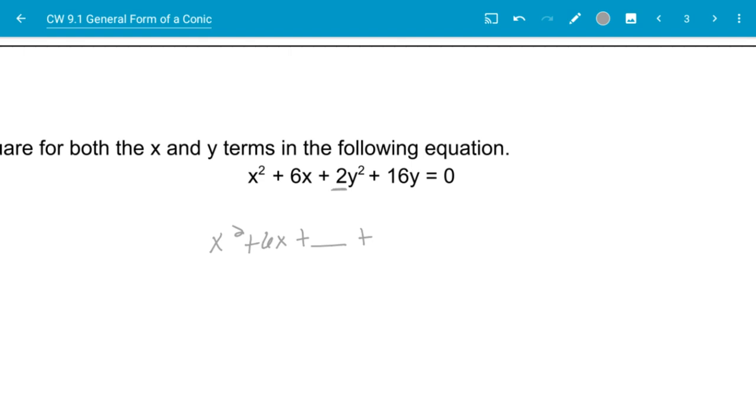So I'm going to factor out a 2, and when I factor that out, I'm going to have y squared plus 8y. And then I'll go ahead and put in what I need to put in there to complete the square.